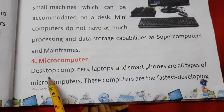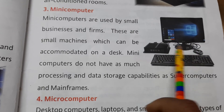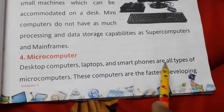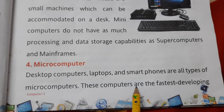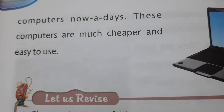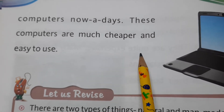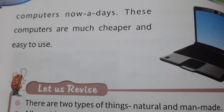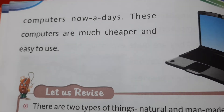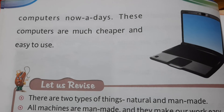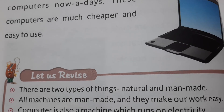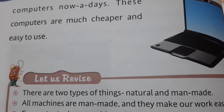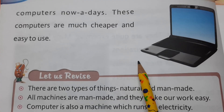Now, microcomputers. Desktop computers — which can be accommodated on a desk or table — laptops, and smartphones are all types of microcomputers. These computers are the fastest developing computers nowadays. They are much cheaper and easier to use. Every month or two months we can see so many changes in computers and even in phones. Their size is getting smaller but they are getting more efficient.